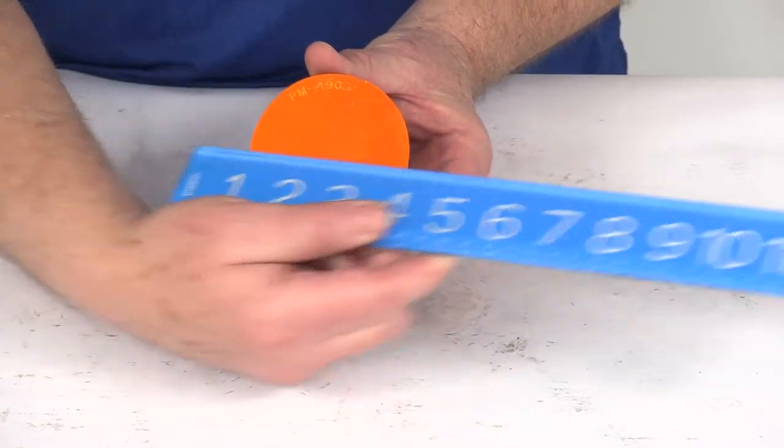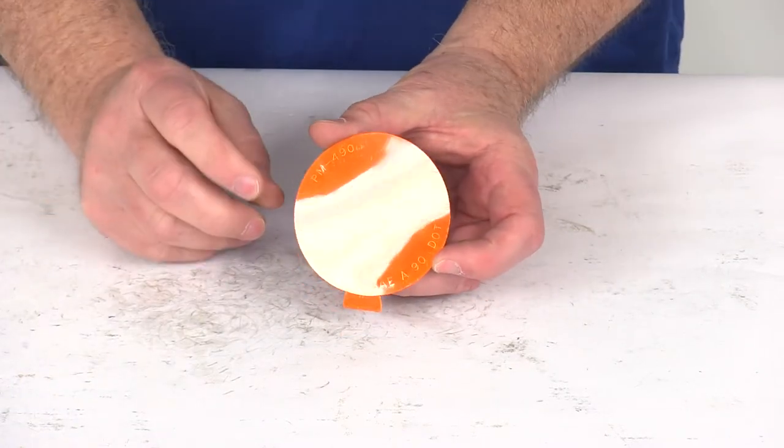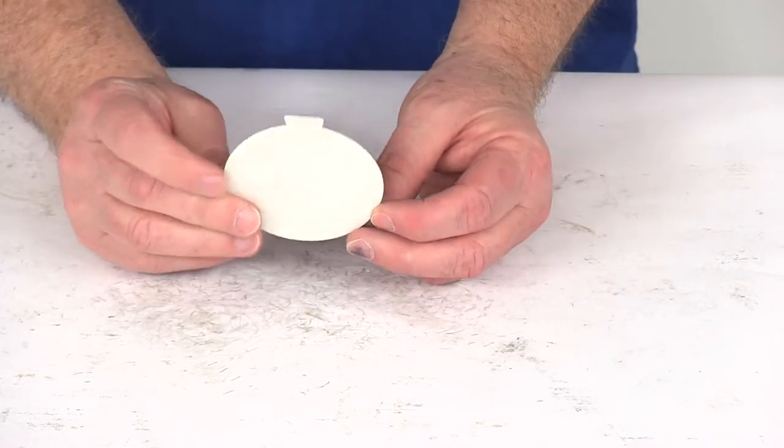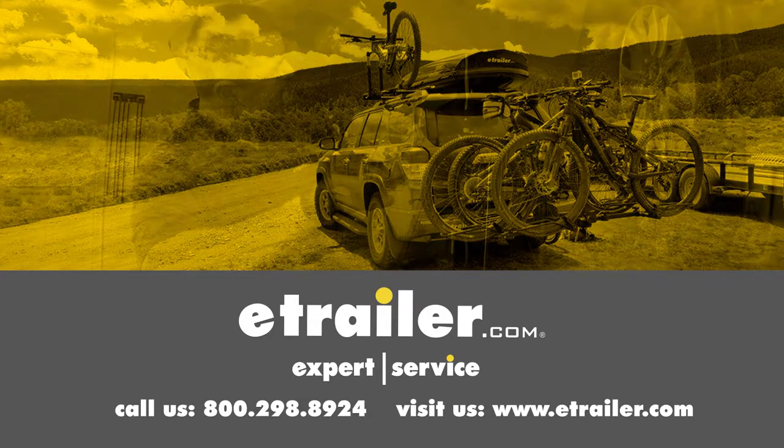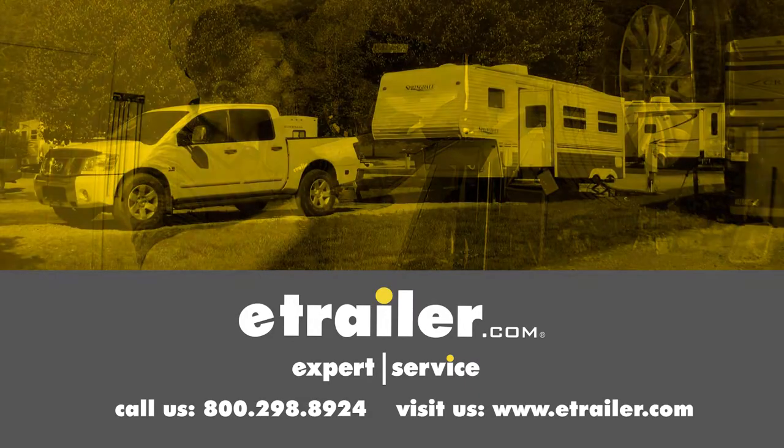It's going to be right at two and seven eighths inches, but that should do it for the review on the Peterson Amber Round Microprismatic Reflector. Click the link below to shop, learn more, or visit us at eTrailer.com.